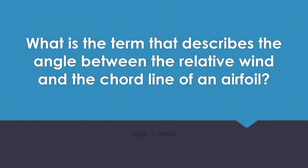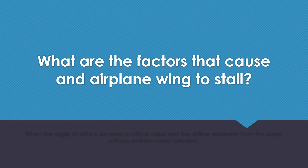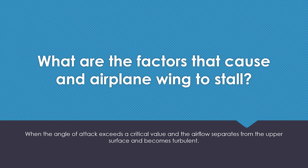What is the term that describes the angle between the relative wind and the cord line of an airfoil? Angle of attack. What are the factors that cause an airplane wing to stall? When the angle of attack exceeds a critical value and the air flow separates from the upper surface and becomes turbulent.